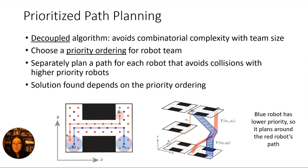For now, let's assume a centralised implementation. The idea is that we assign a priority ordering to our team. Starting with the highest priority robot, we plan for each in turn, making sure that it avoids collisions with the paths of all higher priority robots. The solution found will depend on the priority ordering, so how we assign those priorities is an important question.